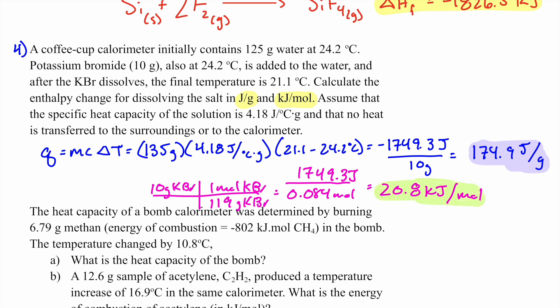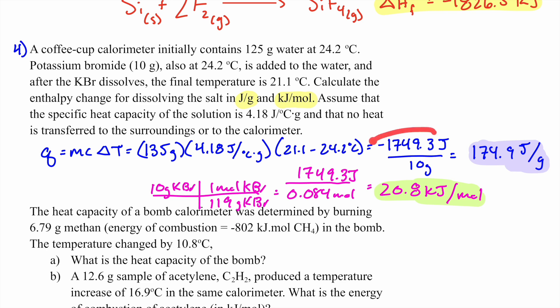You could also convert to kilojoules earlier, but either way — after you get your Q, if the problem asks for joules per gram or kilojoules per mole, you divide by the grams or moles of the limiting reactant. That's how you go beyond Q to the units being requested.